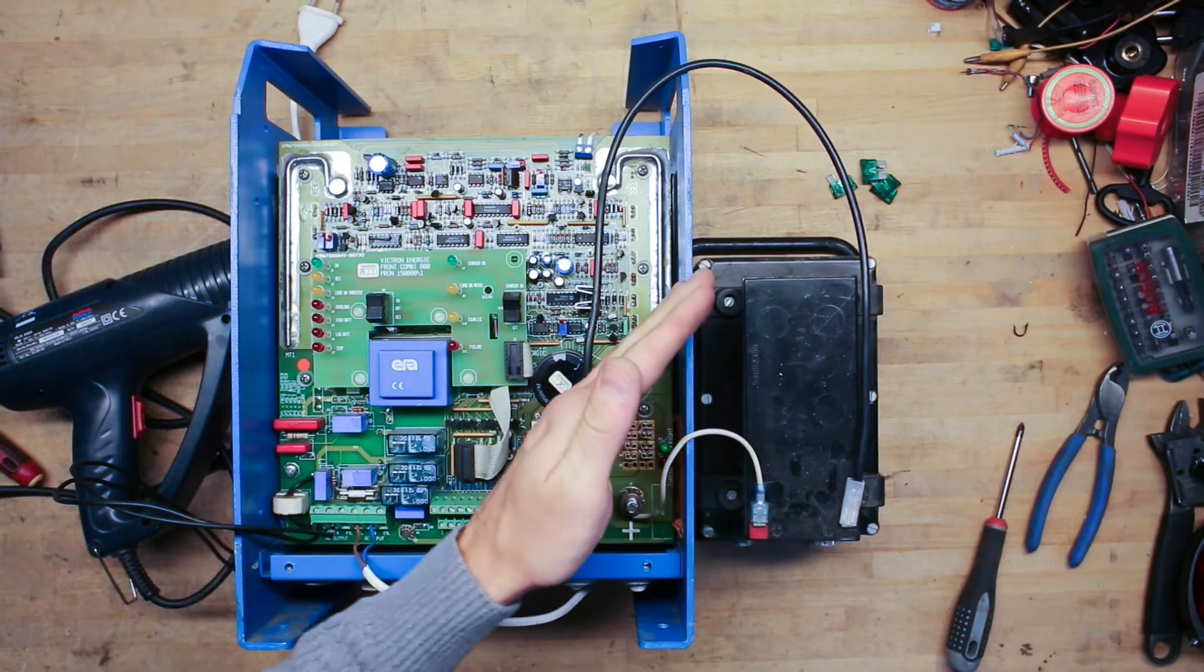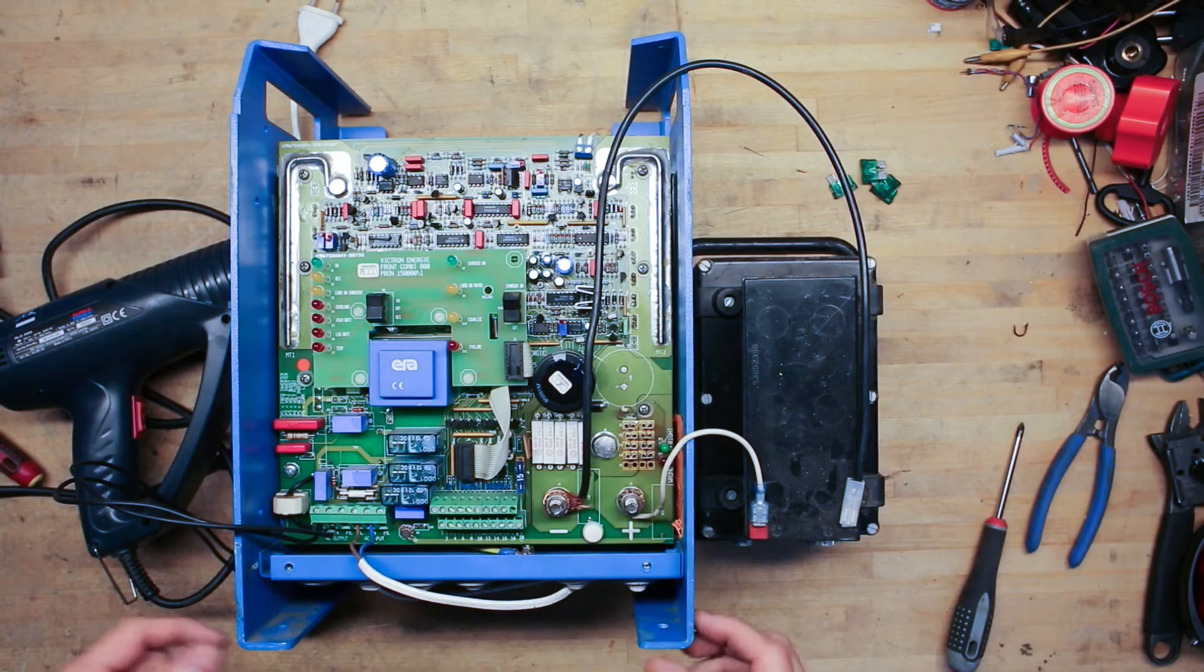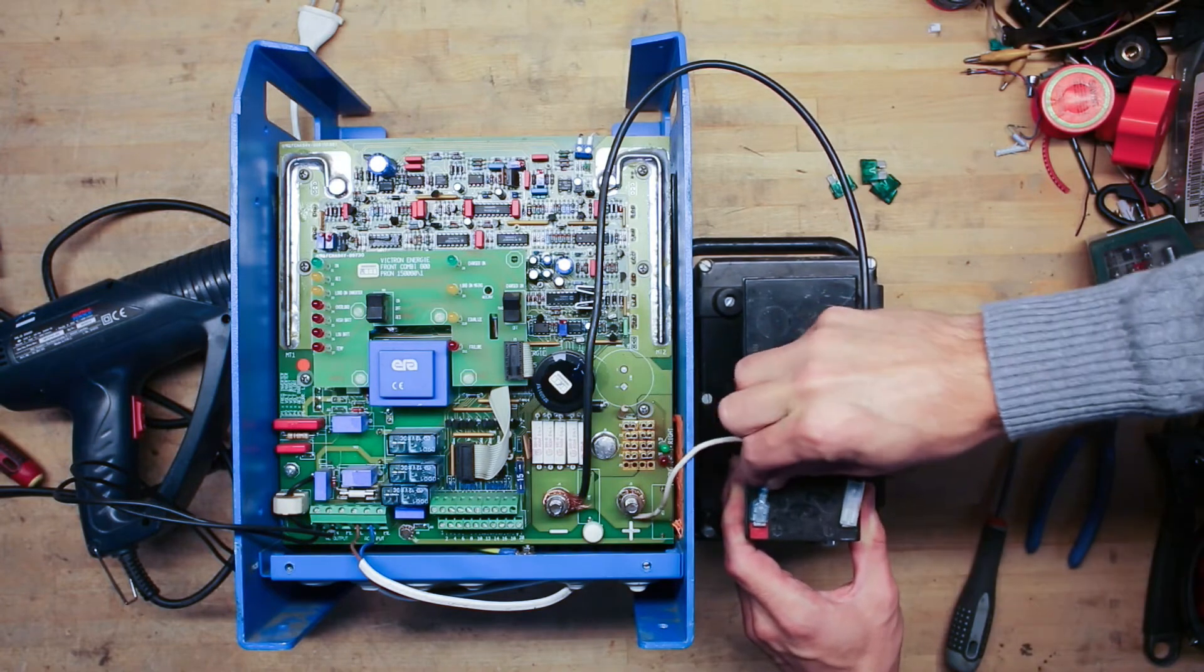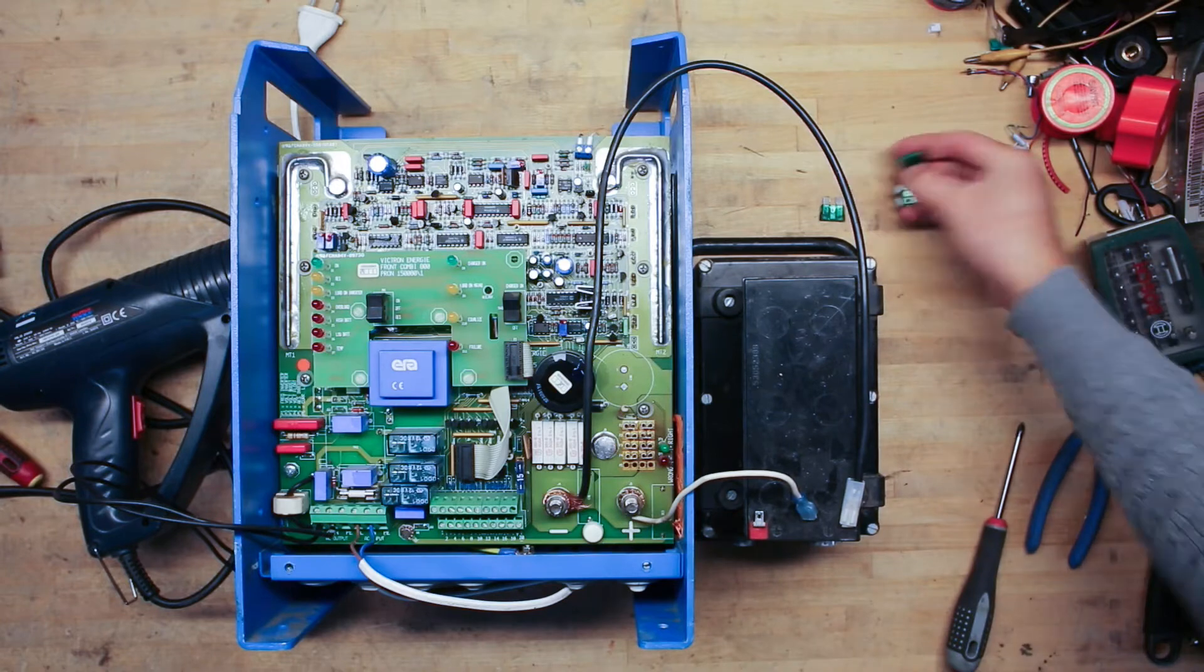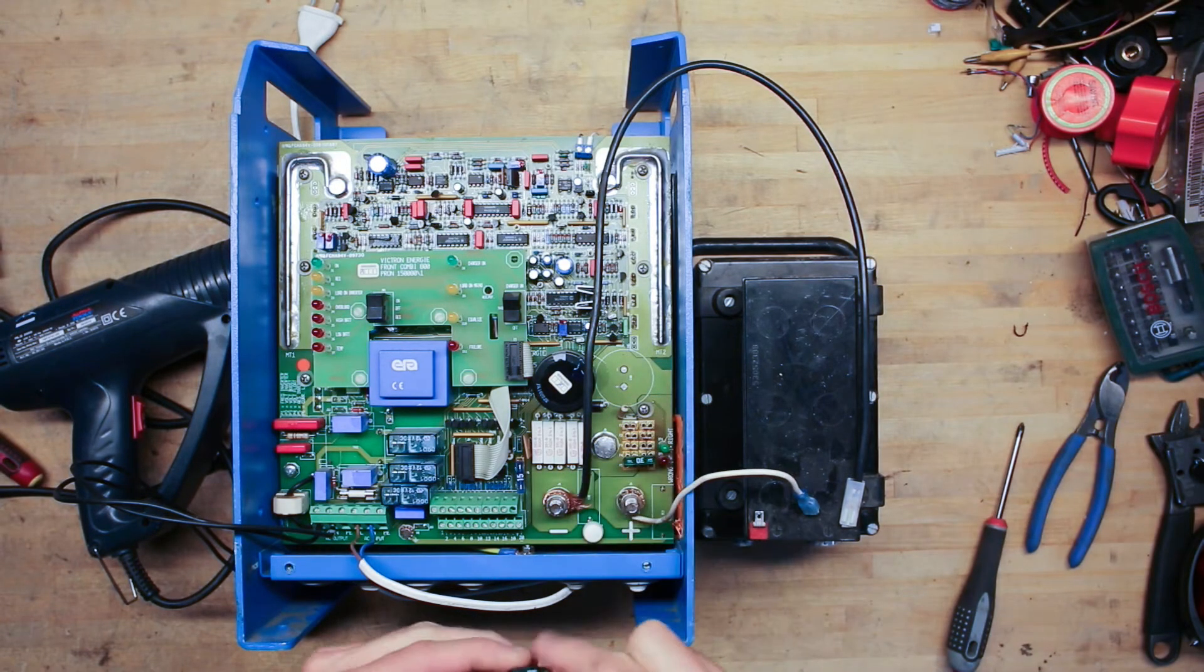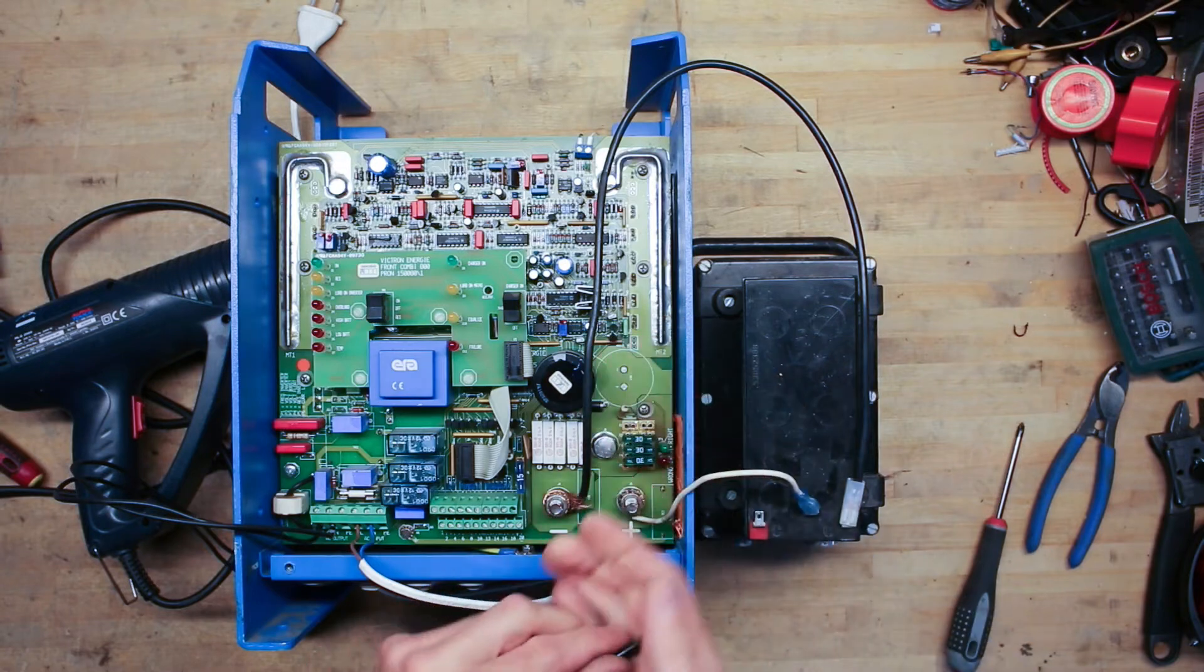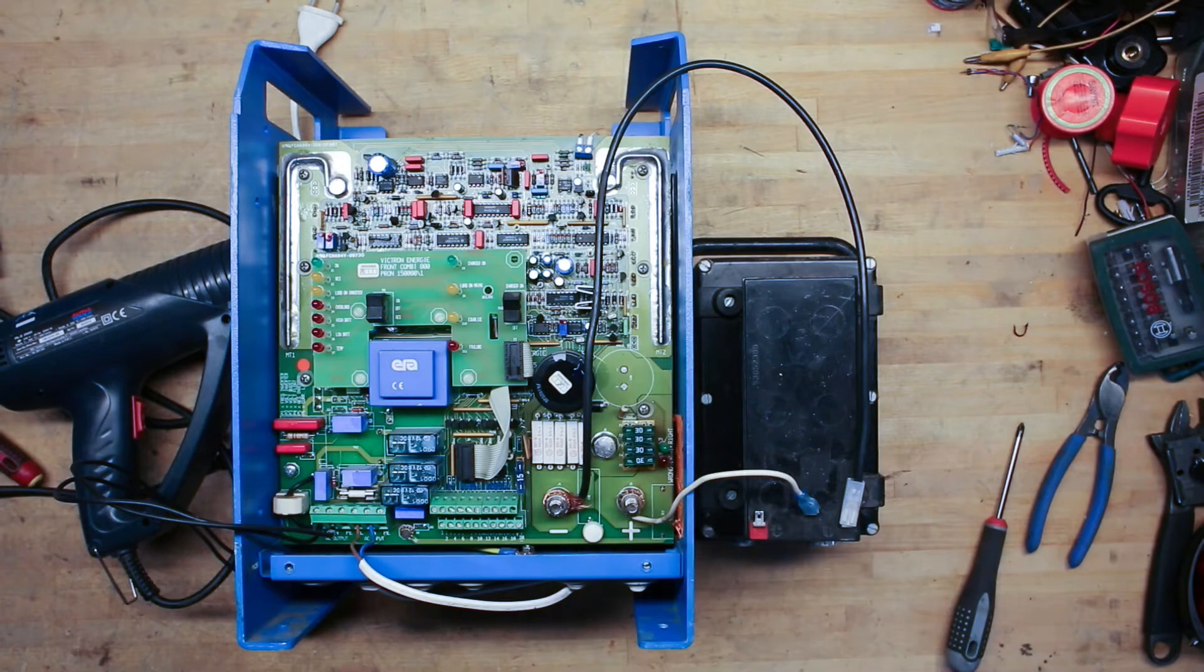And there we have it. A green LED shining up nice down there. So I think we should start by unplugging the battery again. Which the manual also states. Unplug the battery, insert the fuses. And then we can try to plug in the 230 volt AC input. And turn on the battery charger and see what happens.